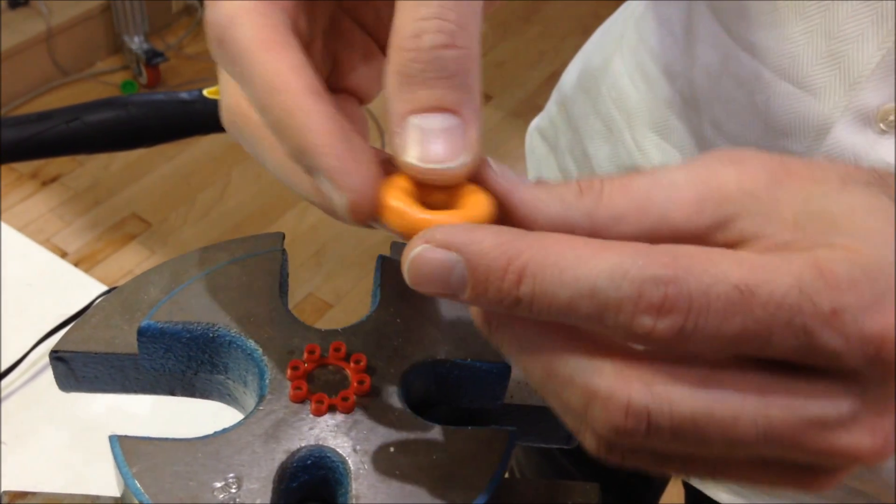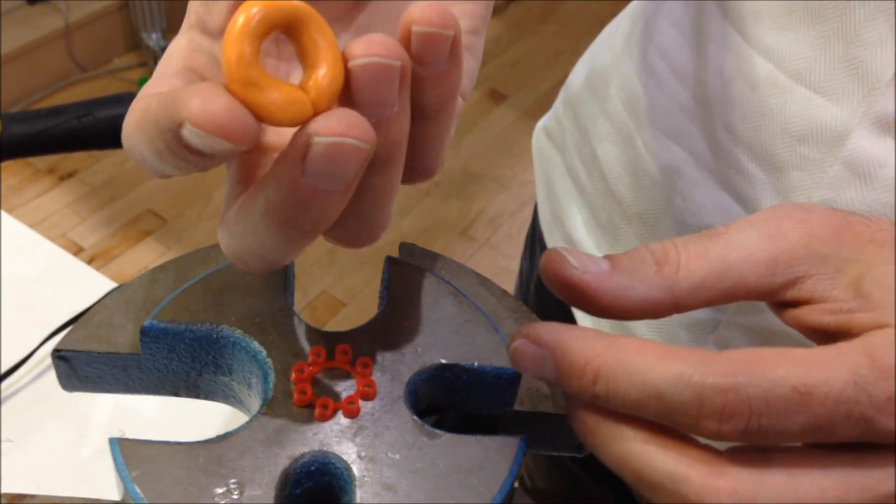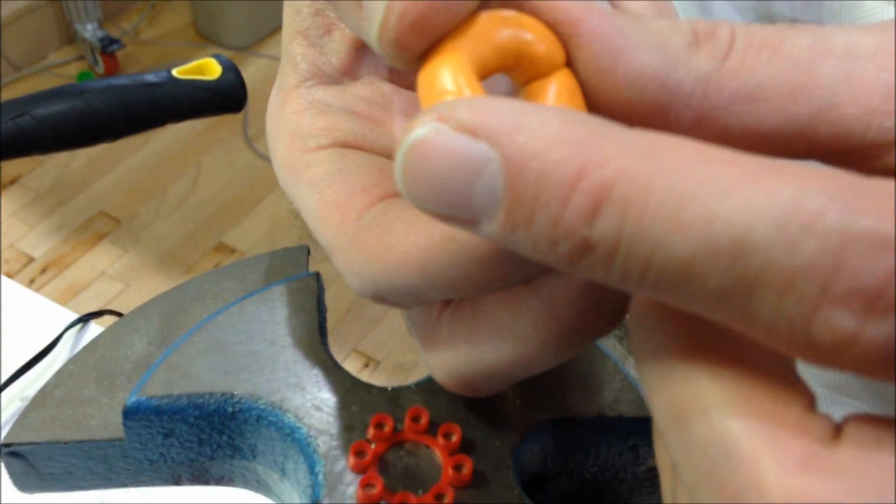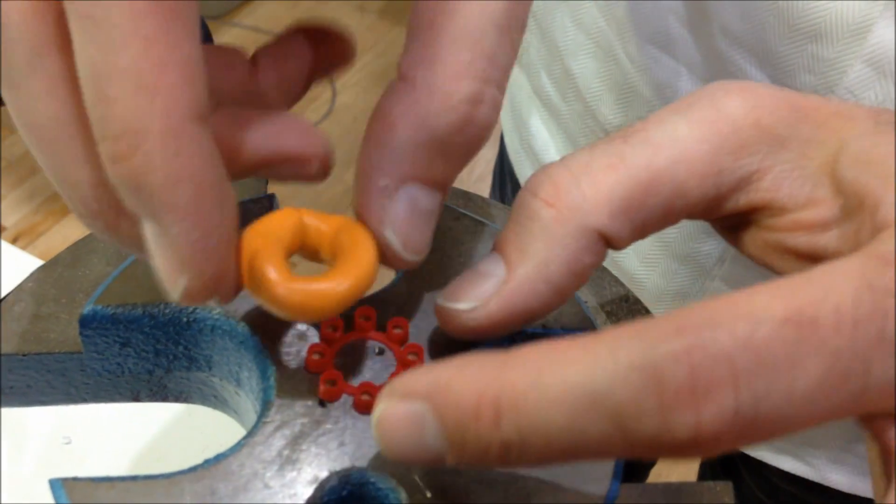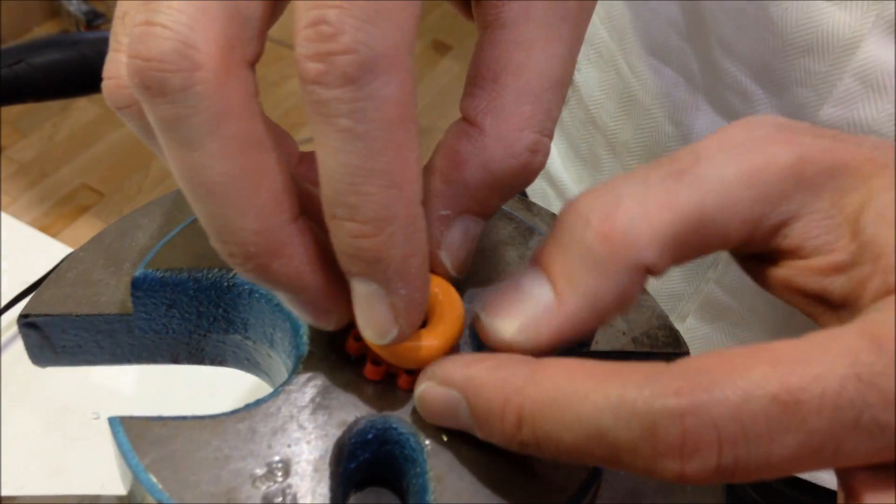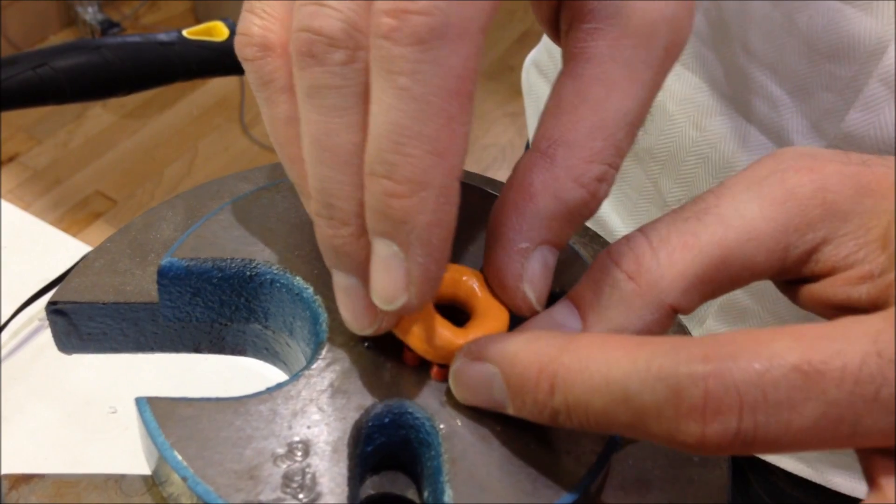So the question is, if we place a ring of Silly Putty, which is very soft and pliable at low velocities, over this cap, this impact reactive chemical.